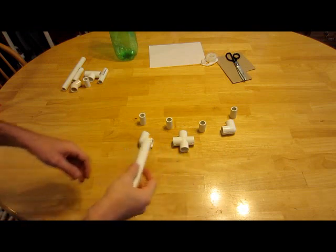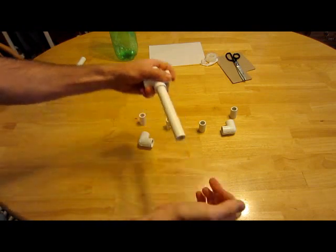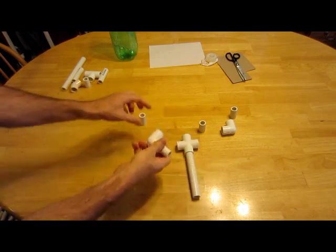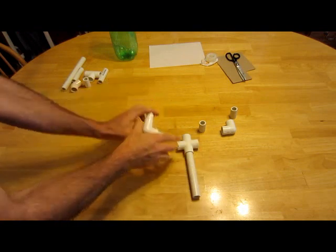Alright, here we go. You take your four way, put one in, get it started. Take your elbows, 90 degrees, put one of the one and a half inch in each of those, like so.